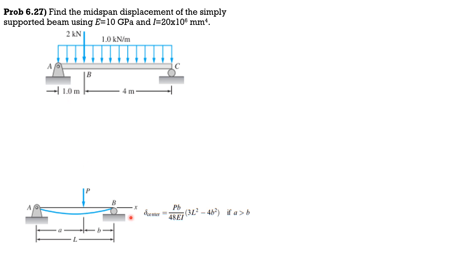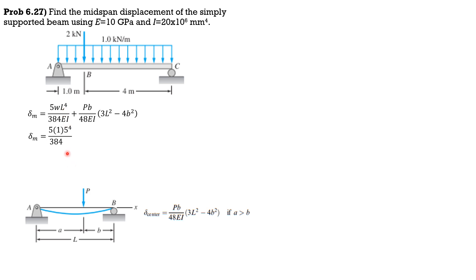If you position yourself at the back, A and B swap, so A is 4 and B is 1. Applying the formula: the mid-span deflection equals 5W₀L⁴ over 384EI where W is 1 kN/m, plus PB over 48EI times (3L² − 4B²) where L = 5 and B = 1. Substituting: 5×1×5⁴ over 384EI plus 2×1 over 48EI times (3×5² − 4×1²), giving delta M equal to 11.096 over EI kN·m³.